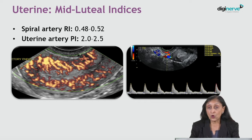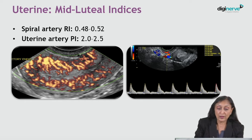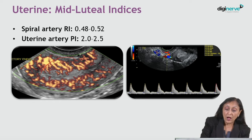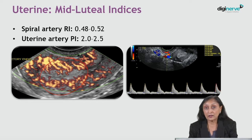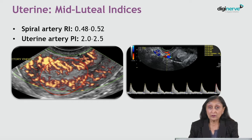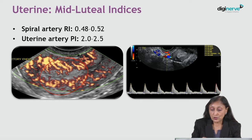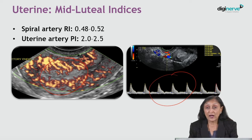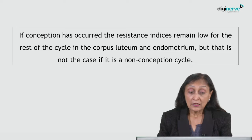Along with that, if you also see spiral artery flow in the inner layers of the endometrium with a low RI again of less than 0.52, and the uterine artery PI of less than 2.5, it again indicates that the environment in the endometrium is good enough to support the implanting embryo.